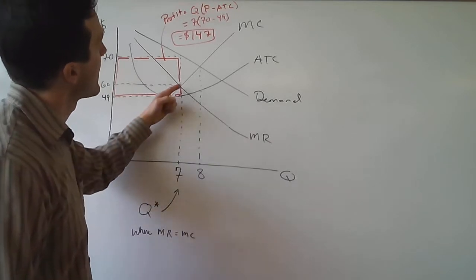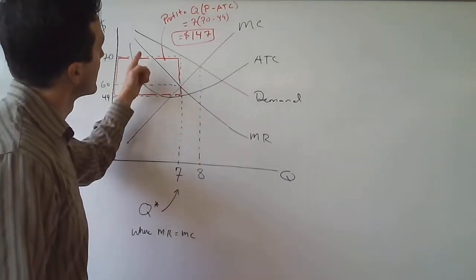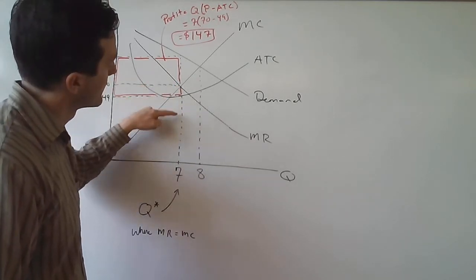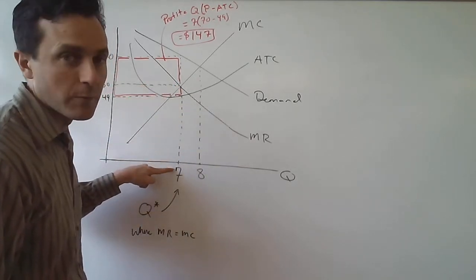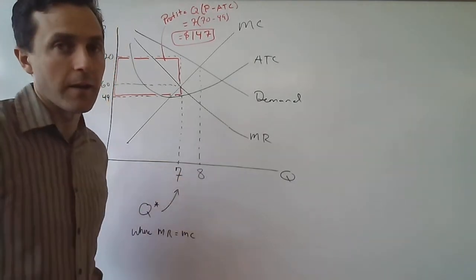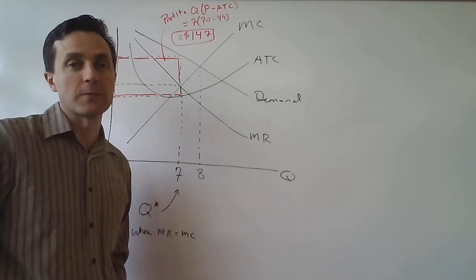So if you look at marginal cost, here's the marginal cost curve, here's the marginal revenue curve, they cross at that point there, for which the quantity would be seven. So seven is the profit maximizing quantity for this firm.